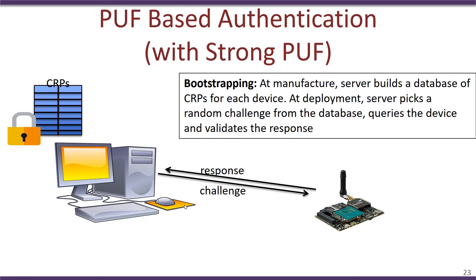At the time of manufacture of this PUF, the manufacturer would create a database of challenges and the corresponding responses. This database is known as the CRP database and it would be stored in the server. The CRP database contains a challenge and the expected response from this particular device. When the edge device is fielded and authentication is required, the server picks a challenge from the CRP table and sends it to the edge device, which then uses it in its PUF to obtain the corresponding response.